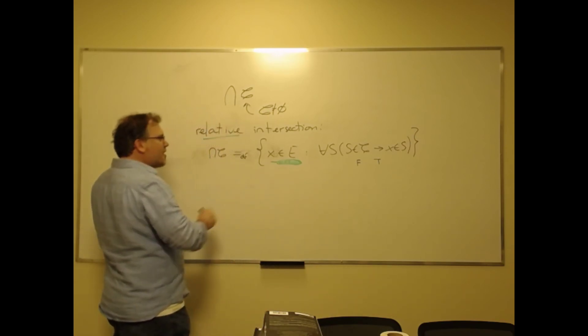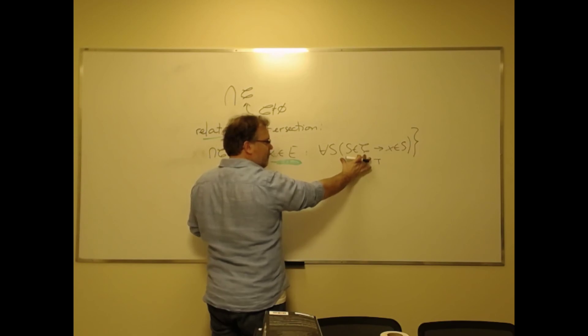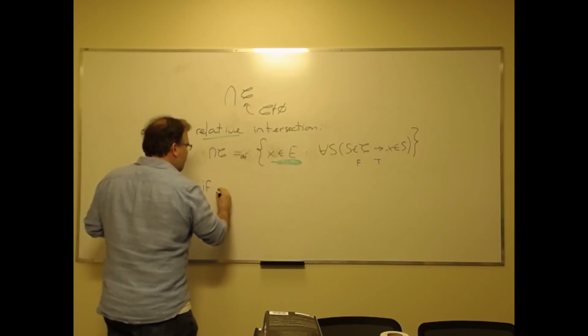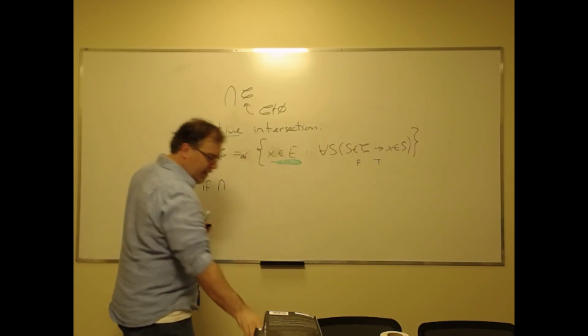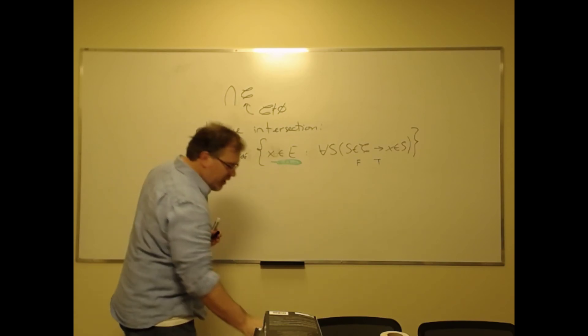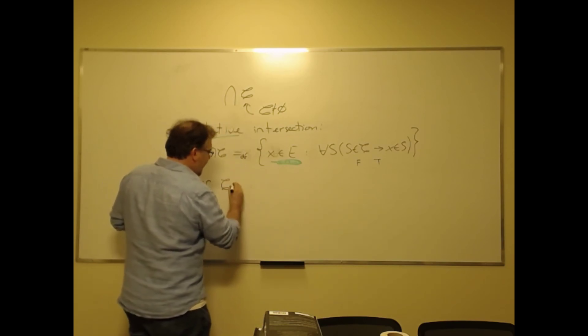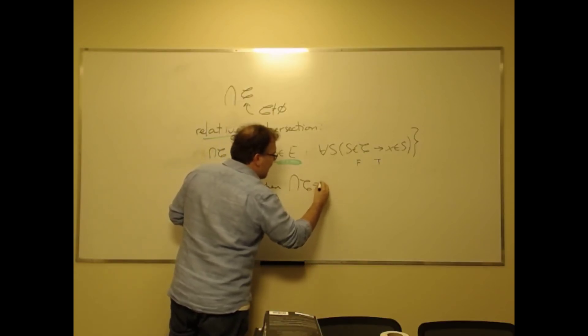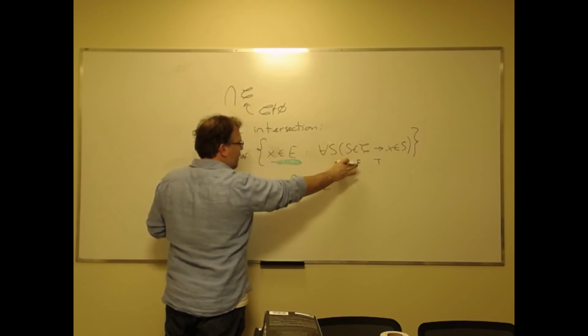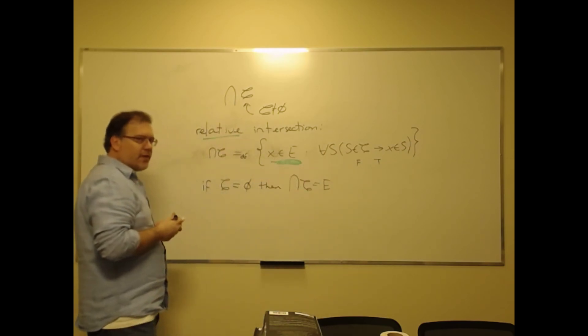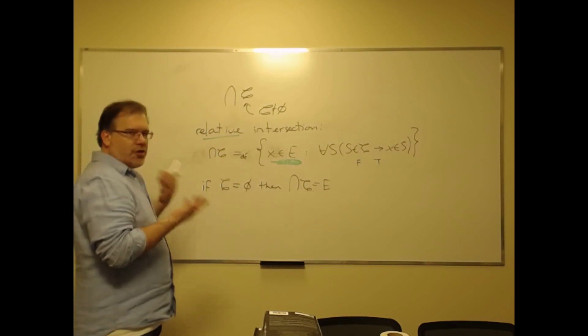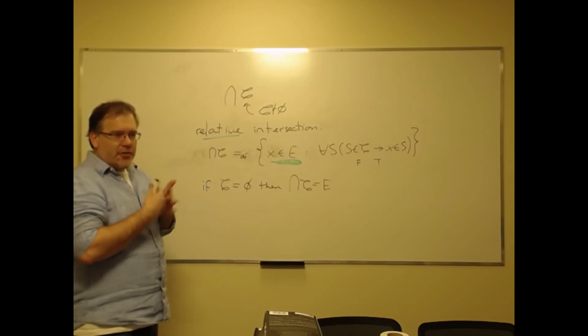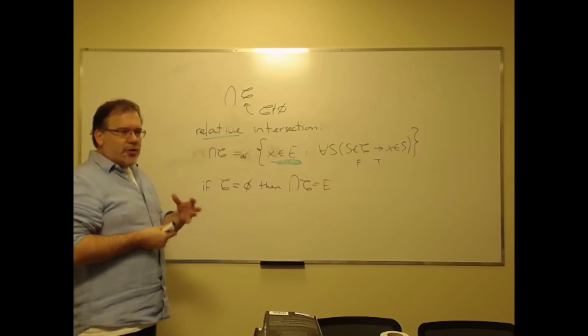It would tell us that this is trivially satisfied, so this part does all the work. In fact, if the collection of sets is empty, then the intersection of the collection is just the set E—that's trivially satisfied. So all we are left with is X is in E.